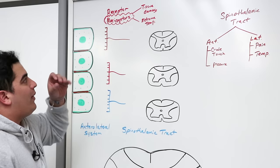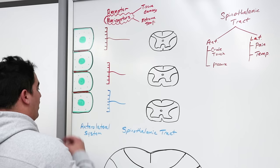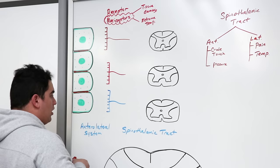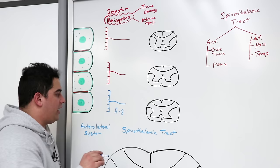We have to understand how tissue damage and extreme temperatures activate nociceptors. There are different ways to stimulate them, but first we need to know there are two different types of fibers. The blue one here is the A-delta fiber. A-delta fibers are specifically for what's called fast pain, or pinprick pain.